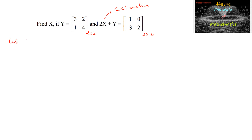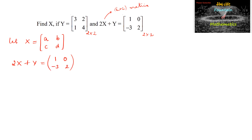Let us consider X is equal to a 2×2 matrix [A, B, C, D], so that we can write 2X plus Y is equal to [1, 0, -3, 2]. So we can write 2 times the matrix [A, B, C, D] plus matrix Y, which is given as [3, 2, 1, 4], which is equal to [1, 0, -3, 2].